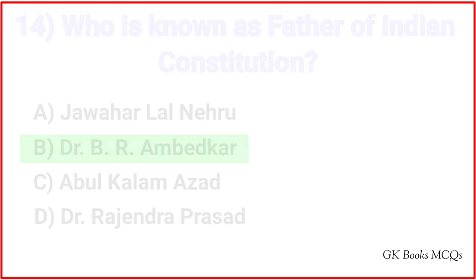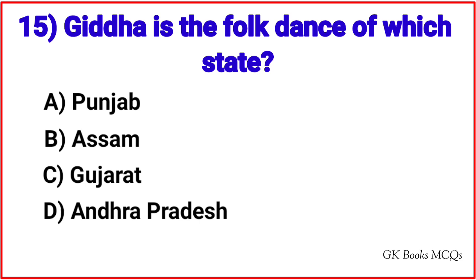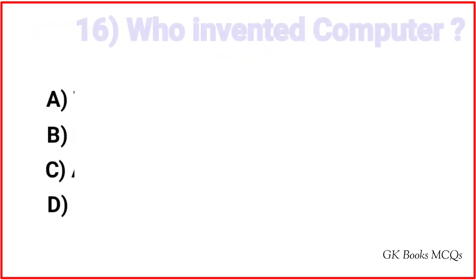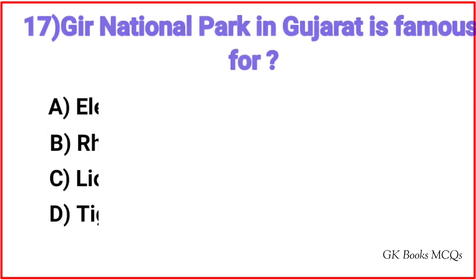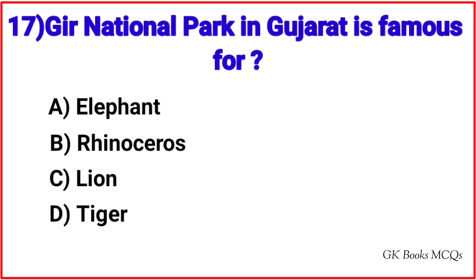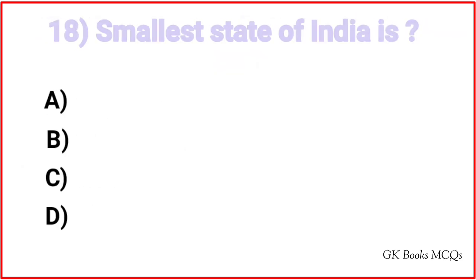Question 14: Who is known as father of Indian Constitution? Correct answer is option B, Dr. B.R. Ambedkar. Question 15: Giddha is the folk dance of which state? Correct answer is option A, Punjab. Question 16: Who invented the computer? Correct answer is option D, Charles Babbage. Question 17: Gir National Park in Gujarat is famous for? Correct answer is option C, Lion.